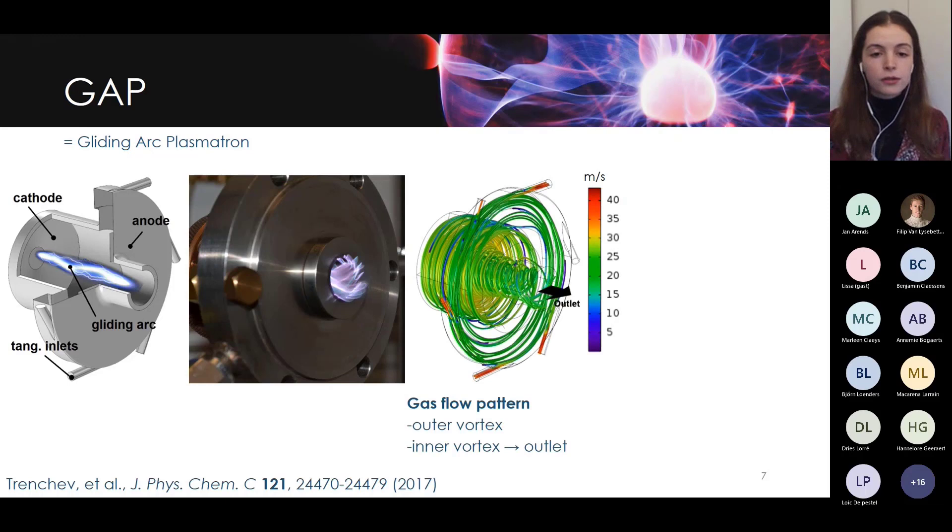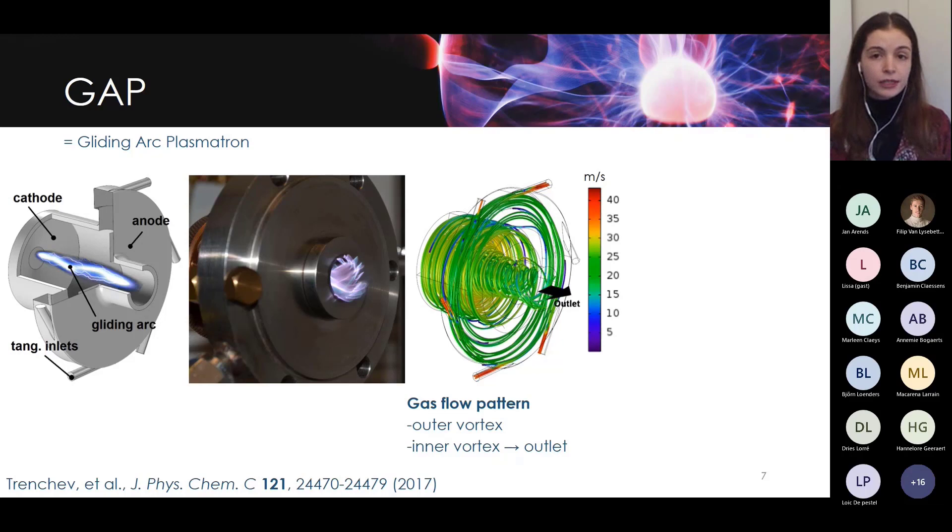A few years ago, our group did a study with computational fluid dynamics and this is a result that came out. As you can see, because of the angle of the inlets, the gas really flows in in a vortex motion and it forms a large outer vortex all the way into the body. But by the time it reaches the top, it loses some of its momentum and it flows back as a smaller reversed vortex to the outlets. In the same study, they also investigated the arc and it's actually, it's exactly this flow pattern that stabilizes the arc in the center. Your plasma is really confined by the flow and then your gas can pass through it and all these effects together leads to quite an efficient gas conversion for an atmospheric pressure plasma.